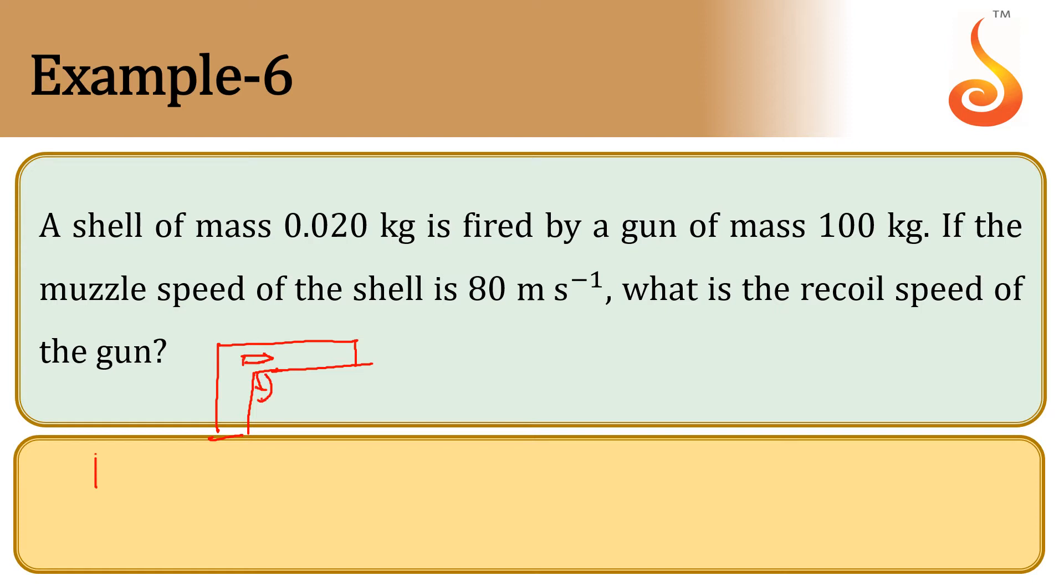So, initial momentum of the whole system is mass of gun times initial velocity of gun plus mass of shell times initial velocity of shell.